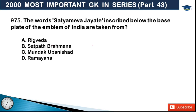Next: the words 'Satyamev Jayate' inscribed below the base plate of the emblem of India are taken from which text? The answer is option C, the Mundaka Upanishad. This is a very, very important question.